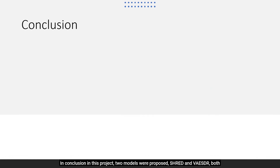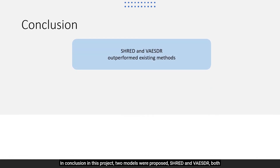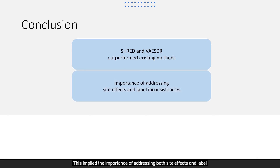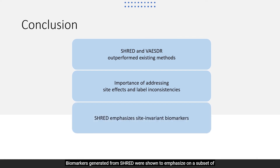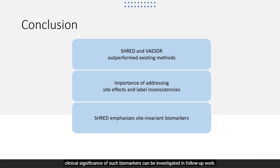In conclusion, in this project two models were proposed — SHRED and VAESDR — both outperforming existing methods in terms of disease classification accuracy. This implied the importance of addressing both site effects and label inconsistencies when dealing with datasets involving multiple sites. Biomarkers generated from SHRED were shown to emphasize a subset of previously discovered features, which could indicate site-invariant biomarkers. The validity and clinical significance of site-specific and site-invariant biomarkers can be investigated in follow-up work.